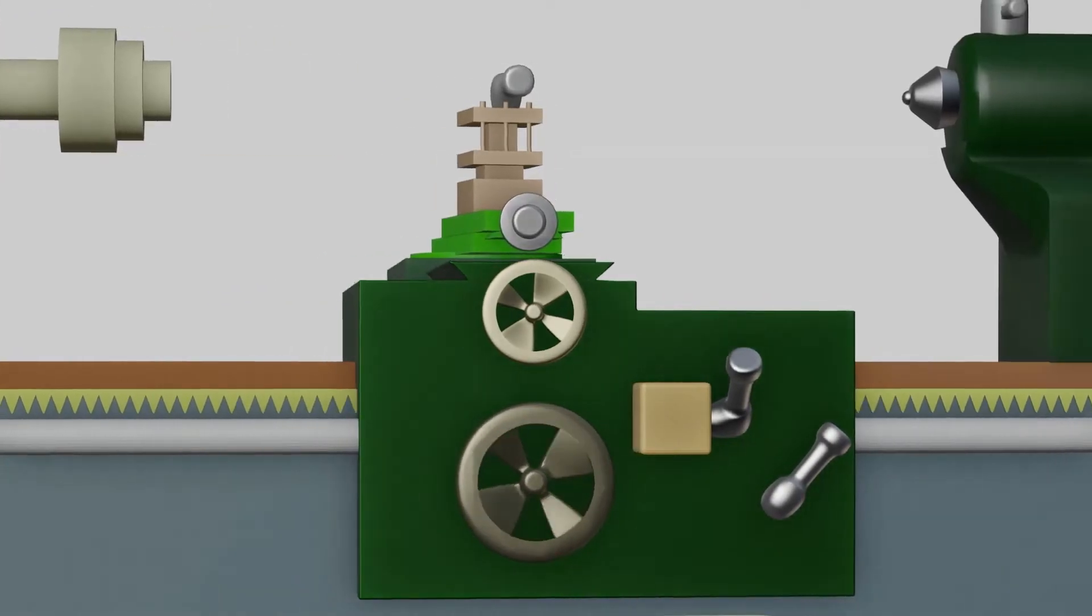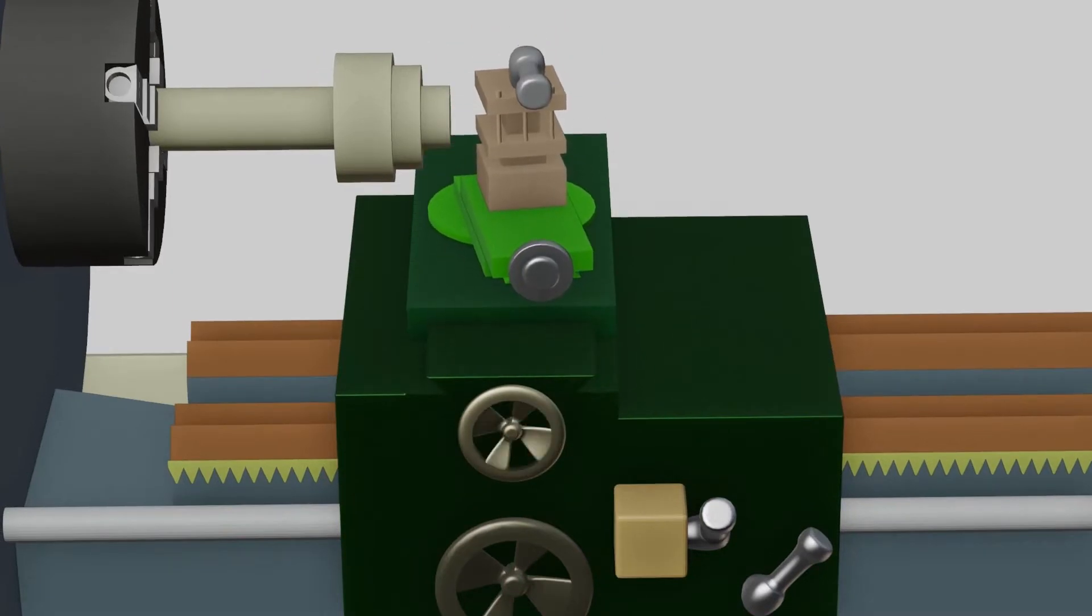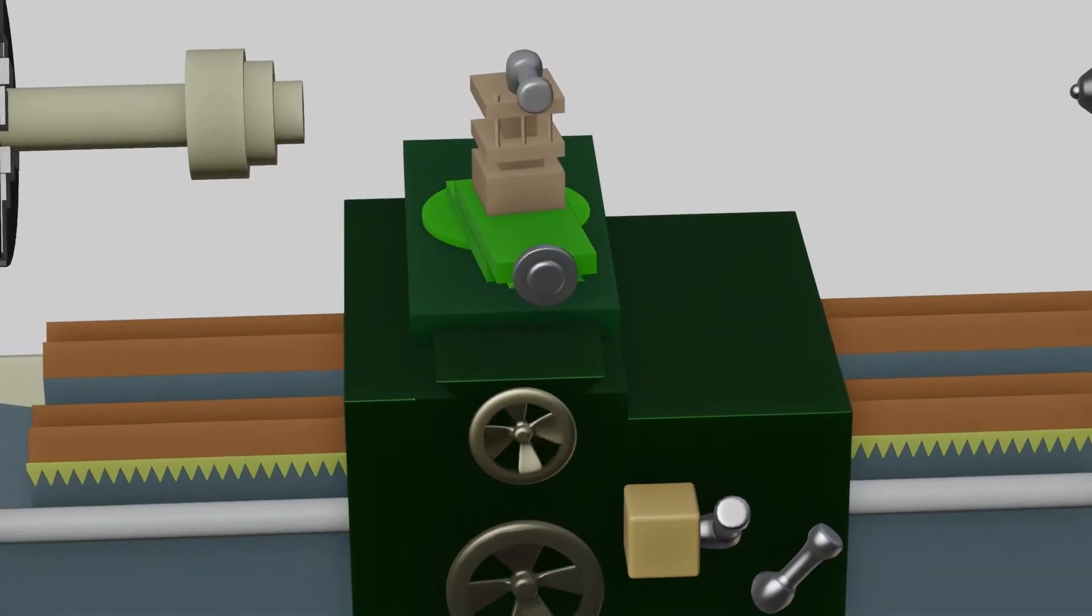Carriage components move as shown. Saddle, cross slide, and compound rest move their axes for the machining.